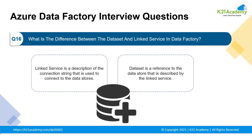Moving to our next question: what is the difference between a dataset and a linked service in Data Factory? A linked service is a description of the connection string used to connect to data stores. For example, when ingesting data from a SQL Server instance, the linked service contains the name of the SQL Server instance and the credentials used to connect to that instance. Whereas a dataset is a reference to the data store described by the linked service — when ingesting from SQL Server, the dataset points to the name of the table containing the target data or a query that returns data from different tables.